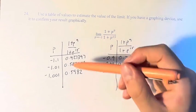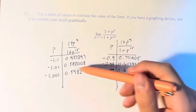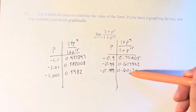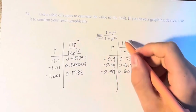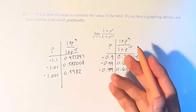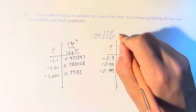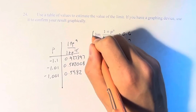We can see that these values are both approaching 0.6. Therefore, since the left limit and the right limit are equal, we can say the limit is equal to 0.6.